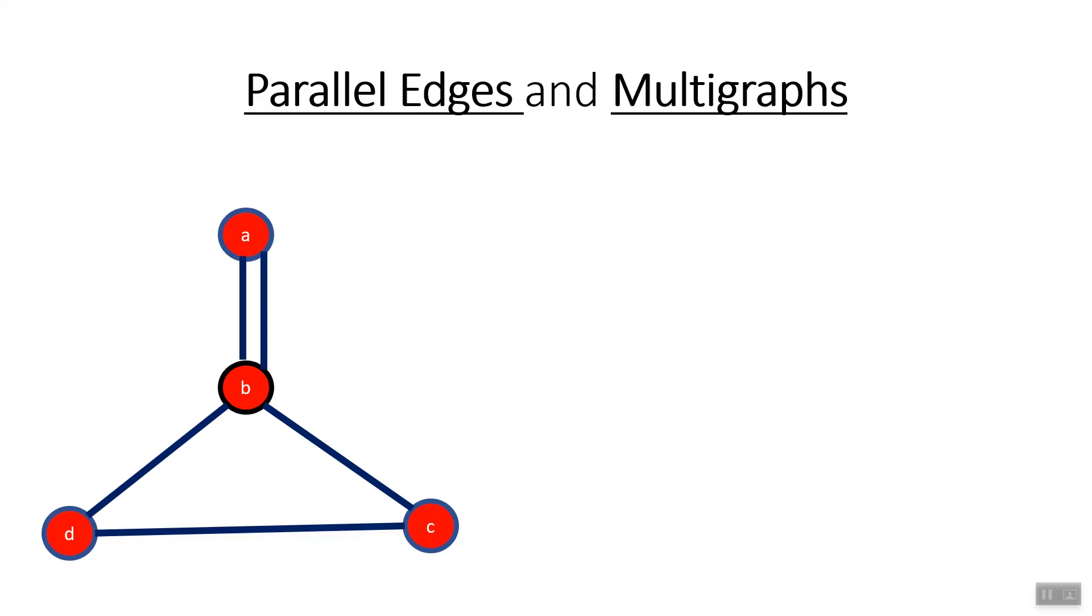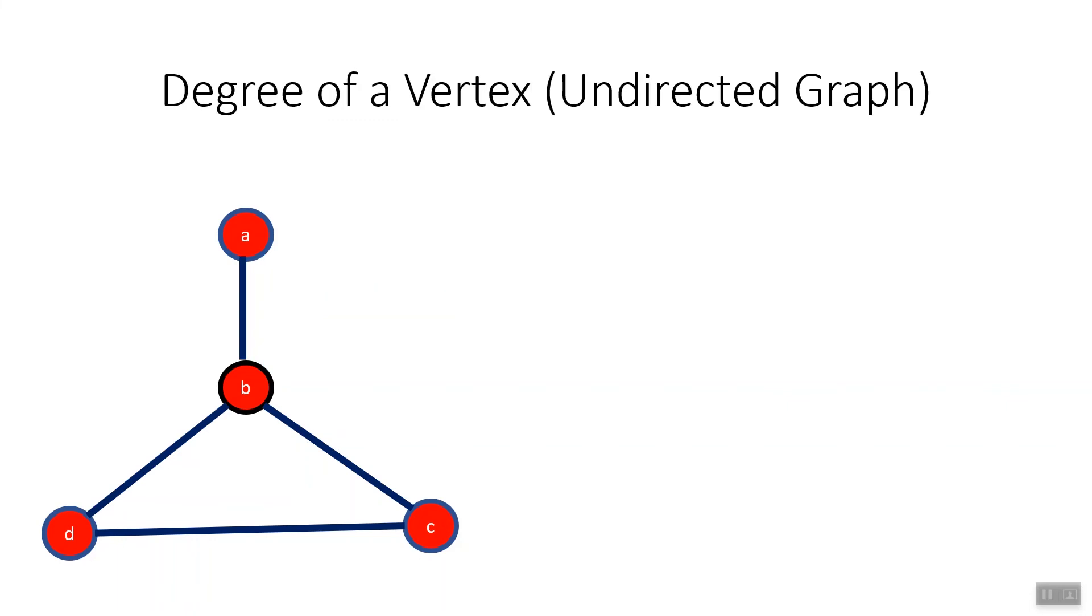If more than one edge connects the same pair of vertices, those edges are called parallel edges. Graphs containing parallel edges are known as multi-graphs. Another characteristic of graphs is the quantity of connections. In an undirected graph, the degree of a vertex is the number of edges connected to it.